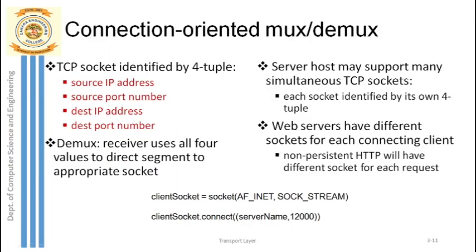Now we move on to TCP. Instead of UDP, TCP is running at the transport layer. TCP is connection-oriented, so connection-oriented multiplexing and demultiplexing takes place. The key difference from UDP is that TCP requires a connection to be established before data exchange begins.